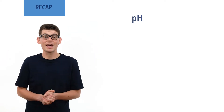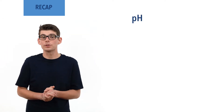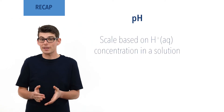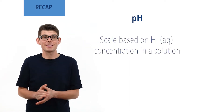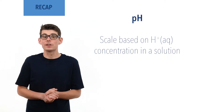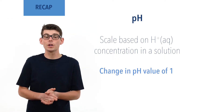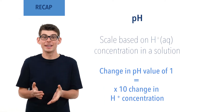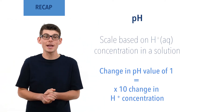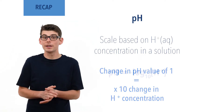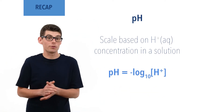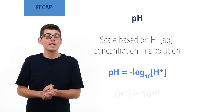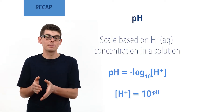pH is a scale used to represent the concentration of H+ ions in a solution. The scale is logarithmic to the base 10, meaning a change in pH value of 1 represents a 10-fold change in H+ ion concentration. pH can be represented in two ways: pH equals minus log to the base 10 of the concentration of H+ ions, and concentration of H+ ions equals 10 to the power minus pH.